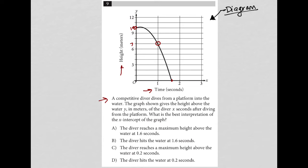So this question says a competitive diver dives from a platform into the water. The graph shown gives the height above the water. Okay, so the diver starts off at 10 meters above the water and then dives down into the water. This makes sense now.